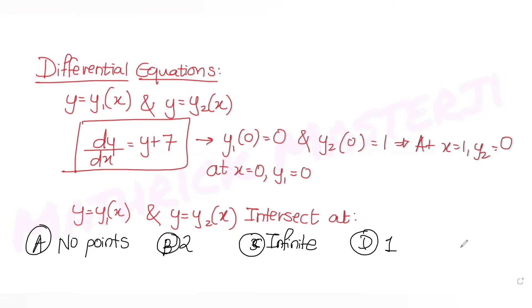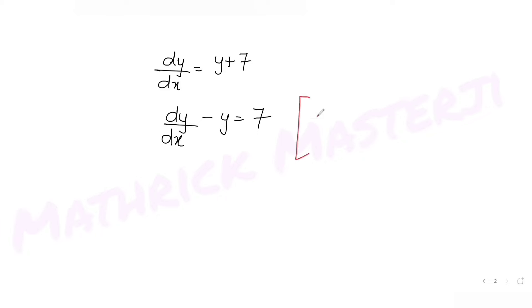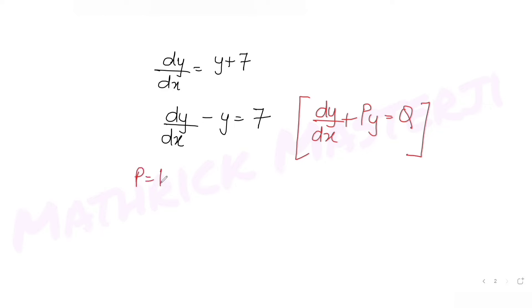We have dy/dx = y + 7. To solve this differential equation, I rewrite it as dy/dx − y = 7. Comparing with the general form dy/dx + Py = Q, I get P = −1 and Q = 7.